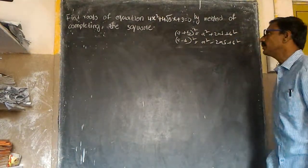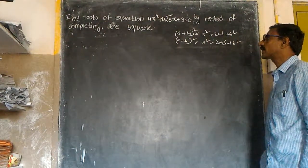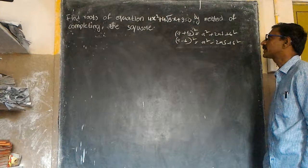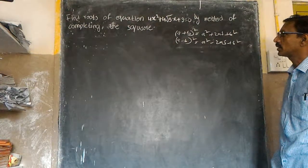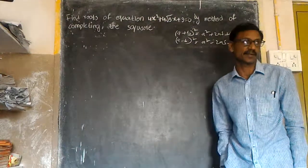Find the roots of the equation 4x² + 4√3x + 3 = 0 by the method of completing the square.